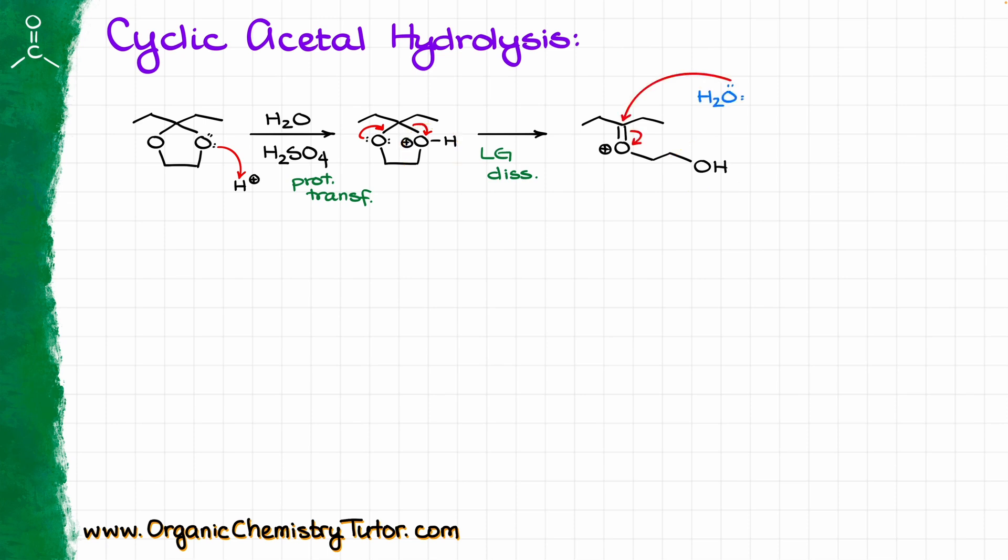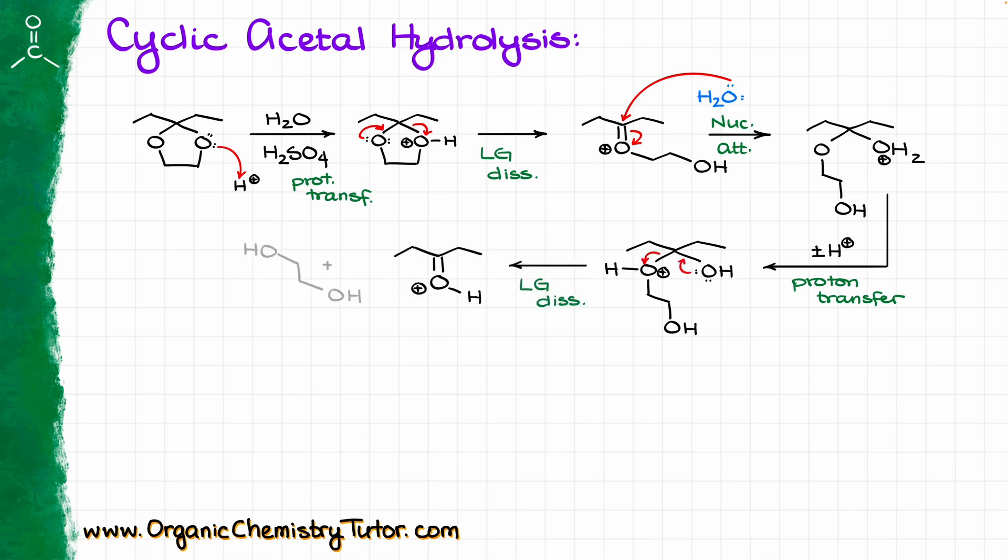Now, after that, we are going to have water coming in and attacking our carbonyl-like compound again, giving us the corresponding protonated intermediate. Then we're going to have a couple of proton transfers. I'm doing a shortcut here and putting both of the steps under the same arrow. And then we are going to have our leaving group dissociation. And at that point, this entire group, this entire diol pops off, giving us our alcohol co-product.